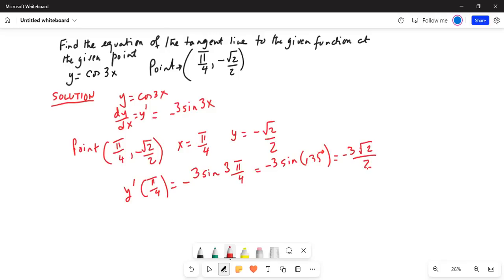So that is the value of the slope at pi by 4, x value of pi by 4. So the equation of the tangent line is y minus y1 is equal to m times x minus x1. So m is the slope. And in this case, y1 is equal to minus square root of 2 by 2 and x1 is equal to pi by 4.